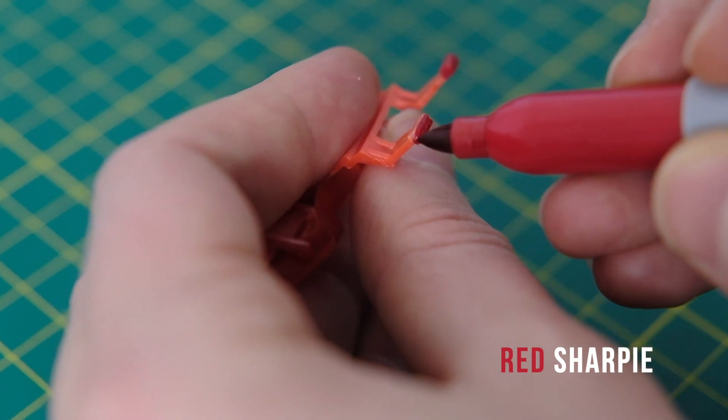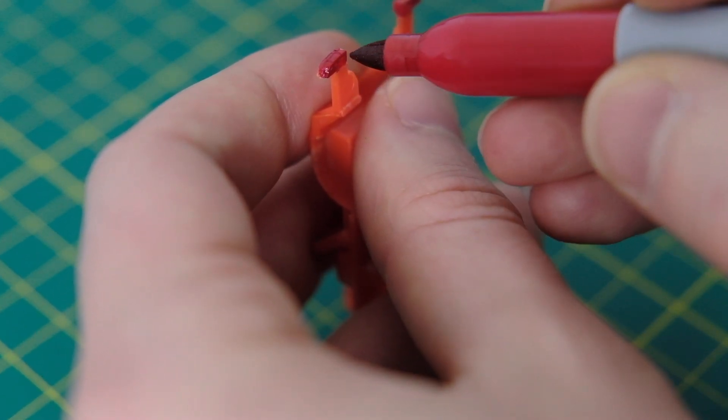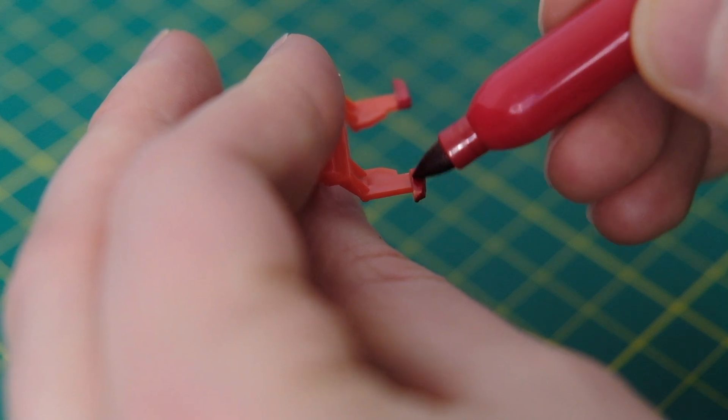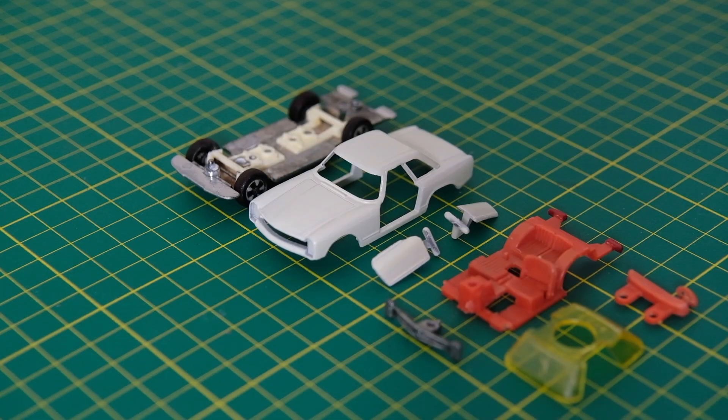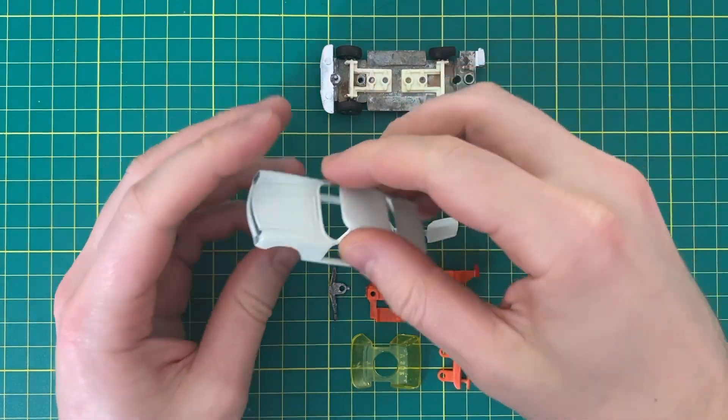Now since the interior had faded I decided to pep the tail lights up with some red highlights using a red sharpie. But now it is time to reassemble my collection of dodgy parts.